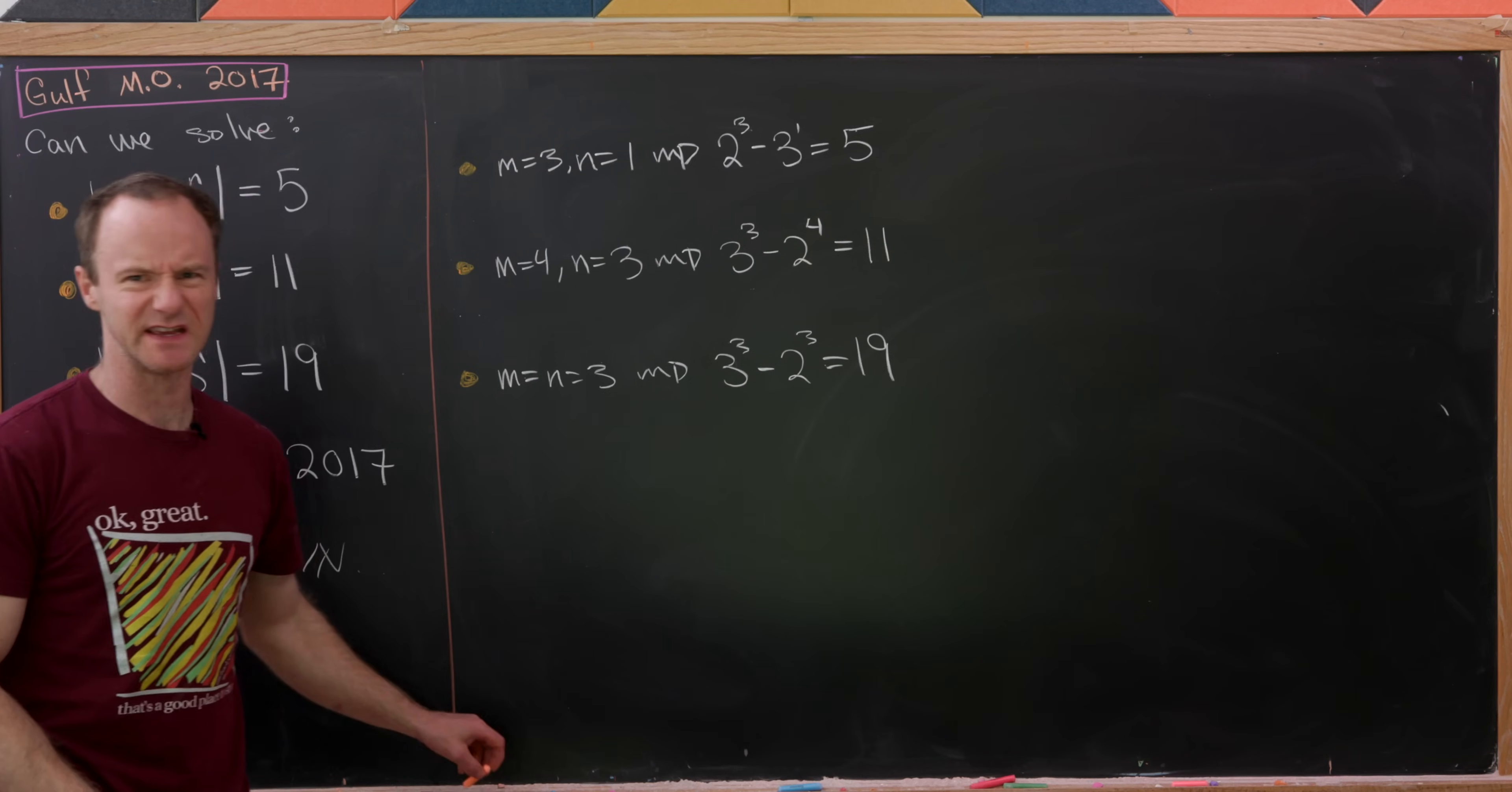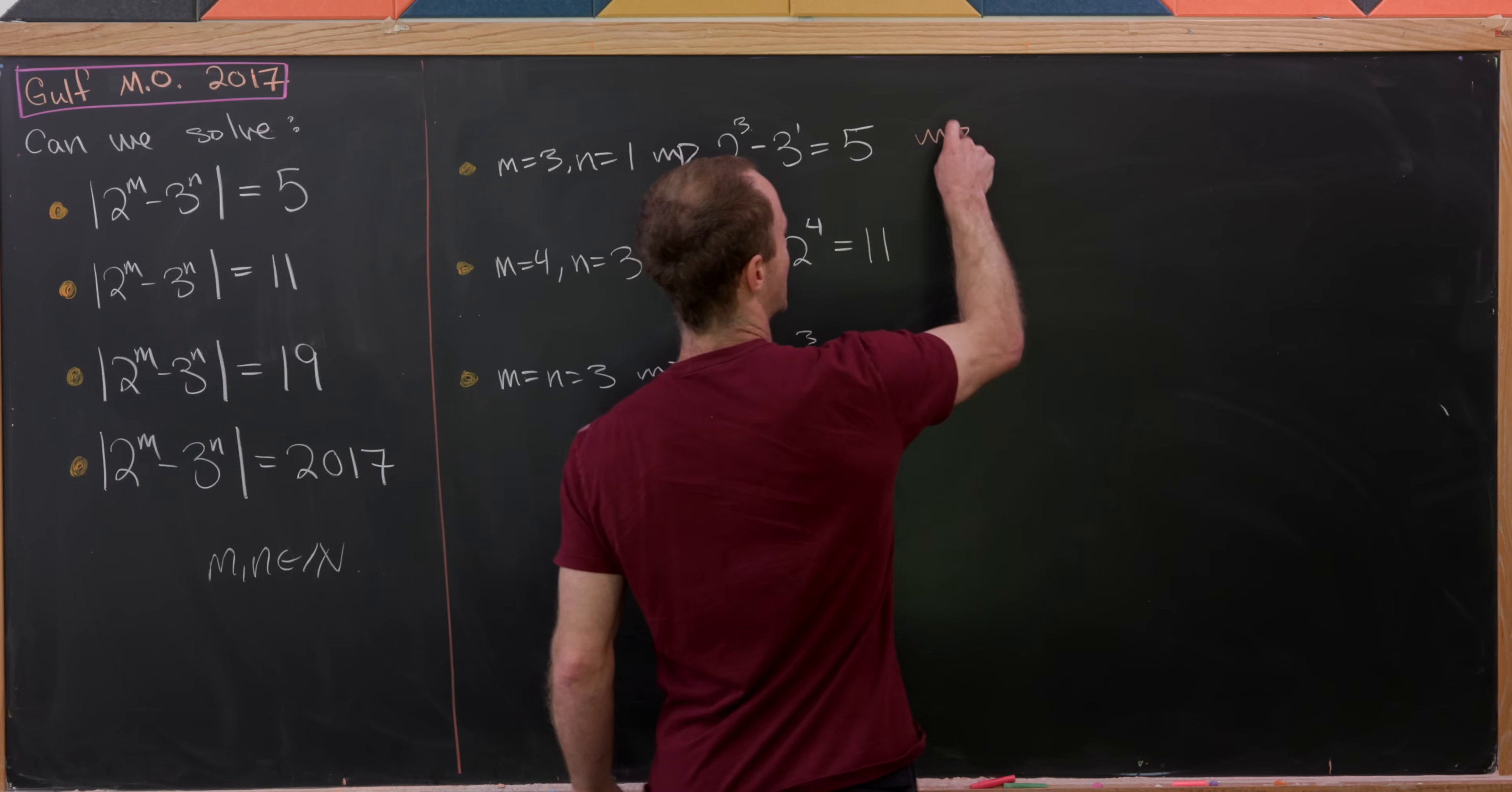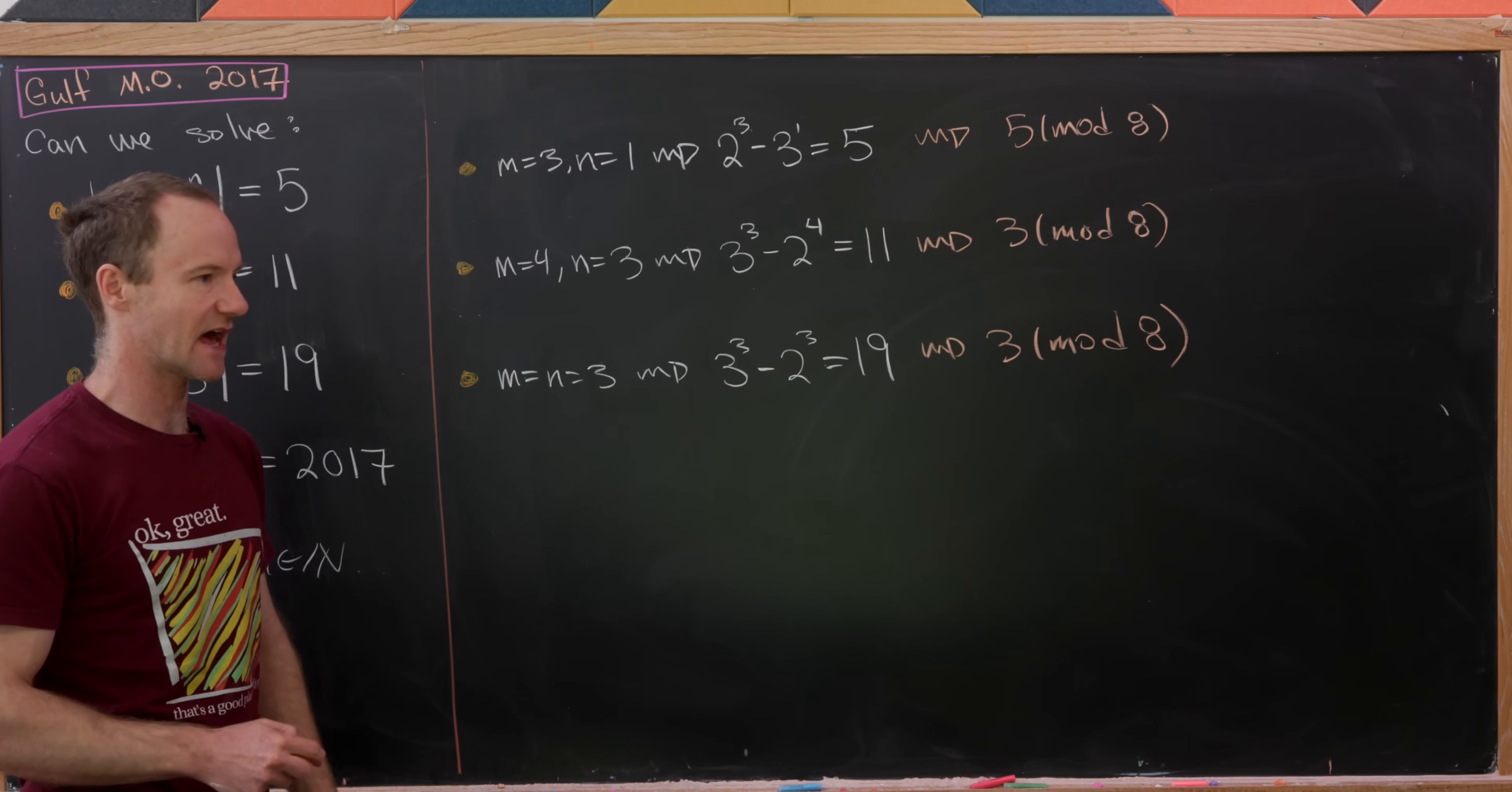So now let's look at these and see if these give us some sort of hint for the answer to this question. Perhaps we'd want to reduce these mod something and compare the equivalence class mod whatever we're working of these and 2017 and see if they match. We'll notice that 5 is congruent to 5 mod 8, 11 is congruent to 3 mod 8, and 19 is also congruent to 3 mod 8. So it looks like if we've got things that are congruent to 3 or 5 mod 8 we've at least got a chance to have a solution.